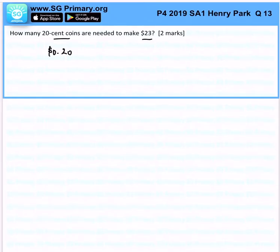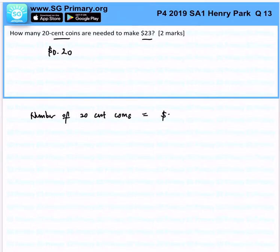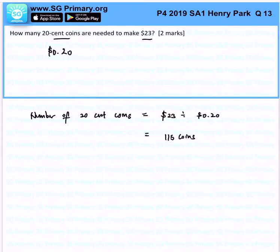So the number of 20-cent coins is 23 dollars divided by 20 cents, which equals 115 coins. That is the solution for this question.